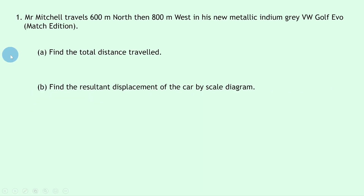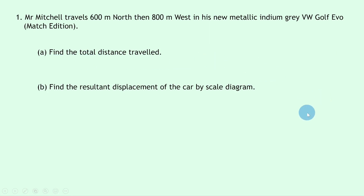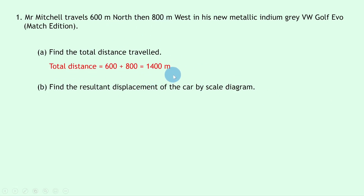Our worked example for the scale diagram method says that Mr. Mitchell travels 600 meters north then 800 meters west in his new metallic indium gray Volkswagen Golf Evo Match Edition — that's my current car. Part A says find the total distance traveled. To find total distance we simply add up the two distances: 600 plus 800 equals 1400 meters, or 1.4 kilometers.